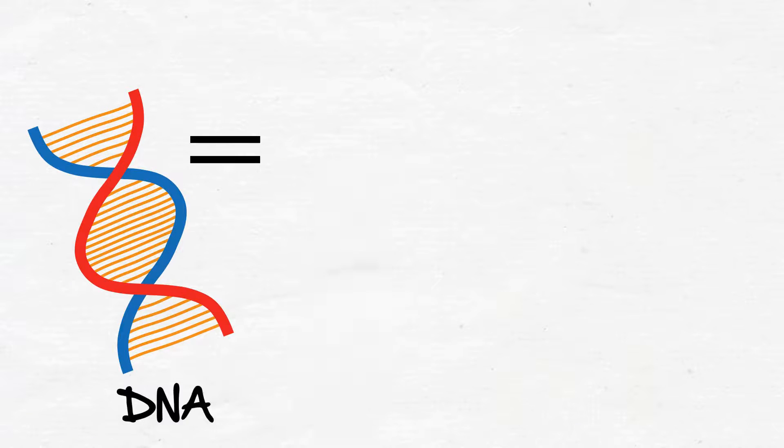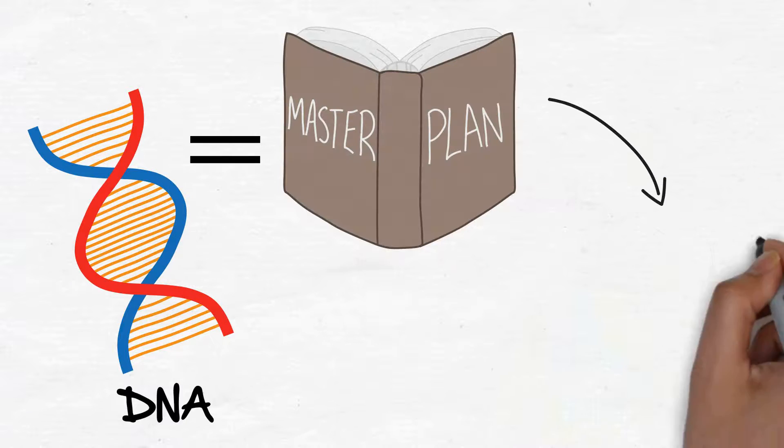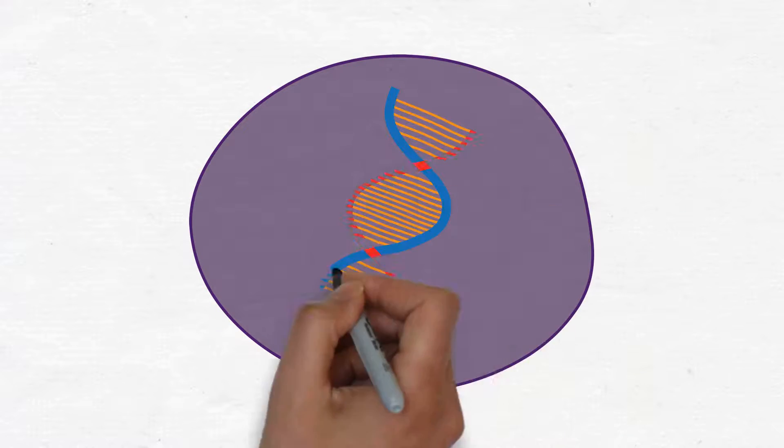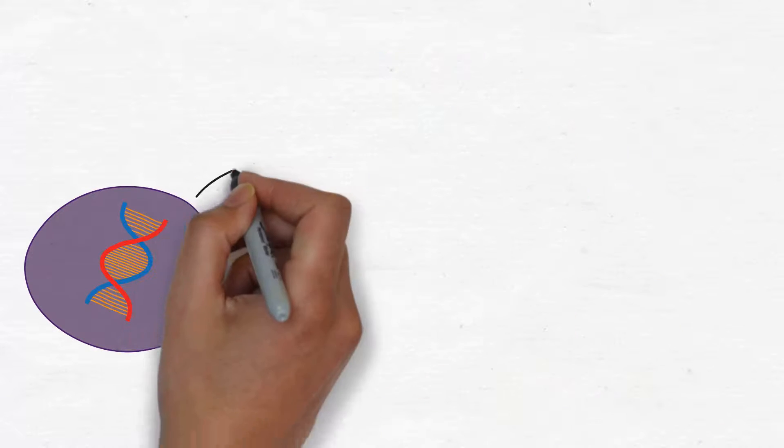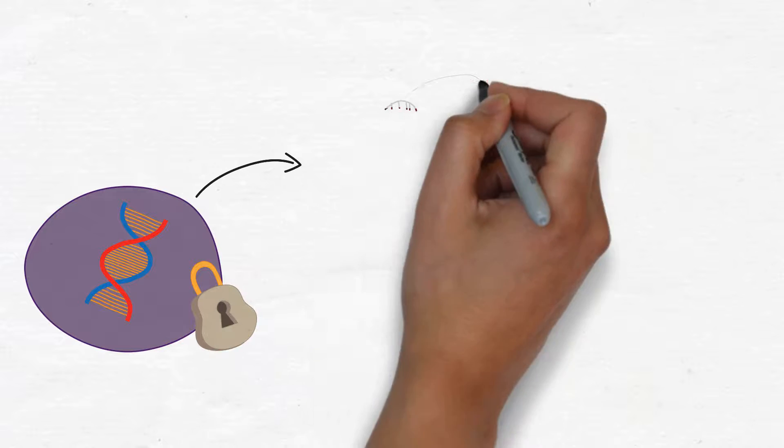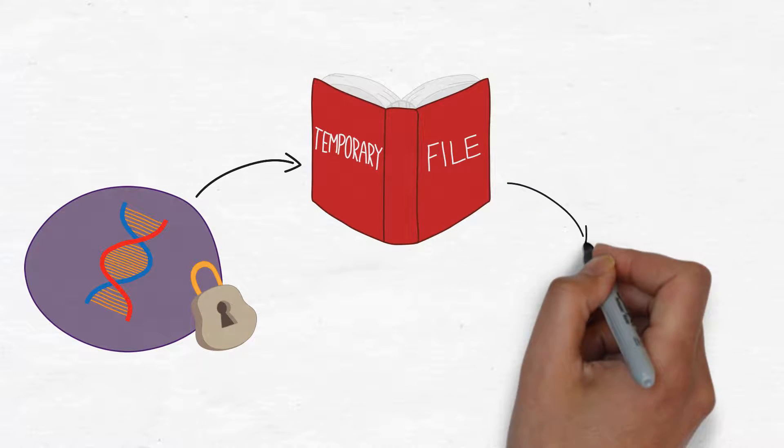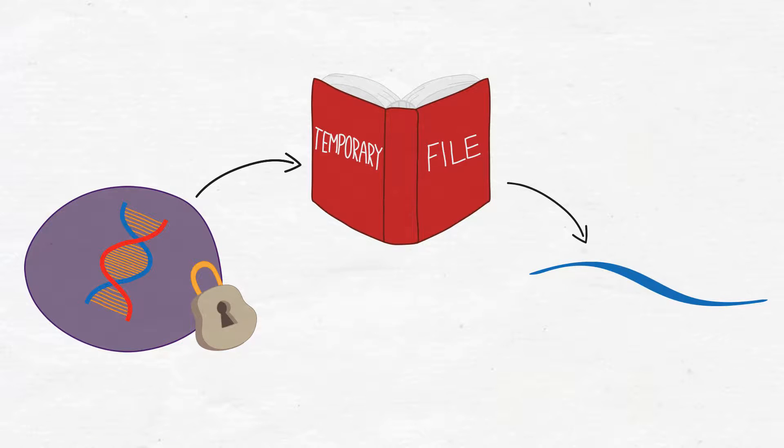DNA is the blueprint for the manufacture of proteins which perform a cell's function, and is so valuable it cannot leave the nucleus. To make sure the instructions on the blueprint are carried out, a temporary copy of each genetic code is made, which can leave the nucleus and transmit the information to the rest of the cell.